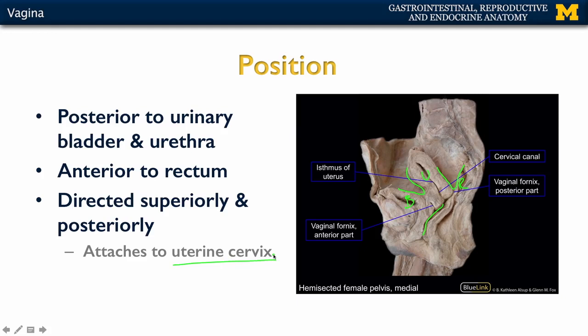Also important to note: the vagina attaches to the uterine cervix, and you have what's referred to as fornices — spaces surrounding the position between the cervix and the vagina.